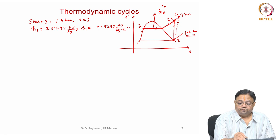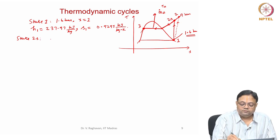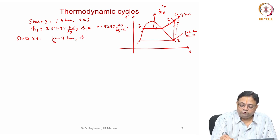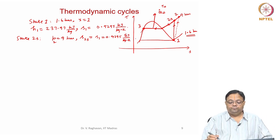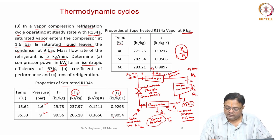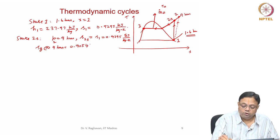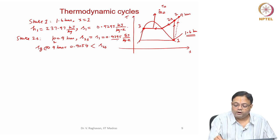State 1 is straightforward. State 2 can be fixed only after fixing state 2S. For state 2S: P = 9 bar and S2S = S1 = 0.9295 kJ/kg·K (isentropic process). Going to the saturation table for 9 bar, I find that Sg = 0.9054. Since Sg at 9 bar (0.9054) is less than S2S (0.9295), state 2 is superheated.